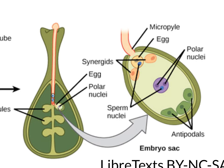Once the sperm nucleus of one of the two sperm cells enters the central cell, it fuses — that sperm nucleus fuses — with both of the polar nuclei. So what we have here is one, two, three haploid nuclei. And when all three of them fuse, they form a triploid nucleus. They fuse to make a triploid, or 3N, nucleus.